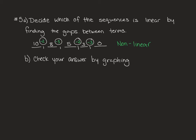Part B asks you to check your answer by graphing both sequences. I've already shown you how to graph so I'll let you do that on your own. Just remember that the linear sequence you can connect the points with a ruler, so they all line up in a straight line. A ruler, the straight edge, should touch all of the points.